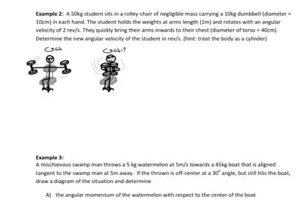They're going to quickly bring their arms inwards to their chest. We'll say the diameter of the torso is 40 cm. And determine the new angular velocity of the system. And we're going to approximate the body of a student as a cylinder.